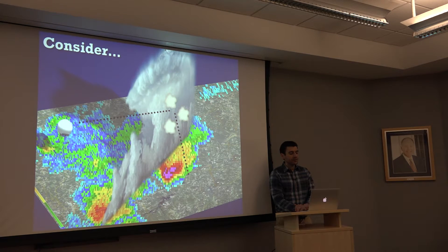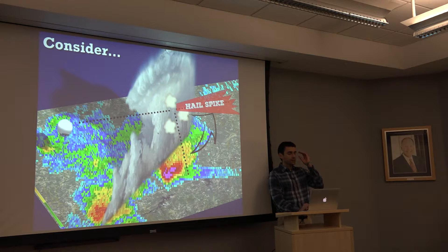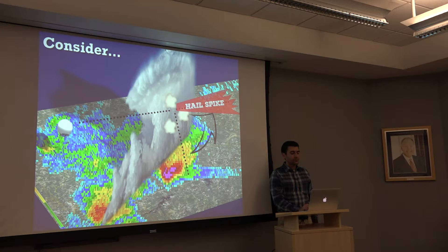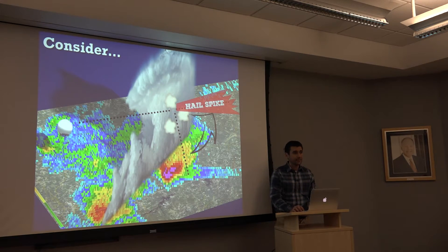The problem is our radar is pointing in this direction — it's not pointing down at the ground. It just assumes that whatever return it received is still out in the direction it's looking. Because the signal took extra time to get back, the radar thinks the return is farther downstream — just reflectivity even farther out — and we get what's known as the hail spike. We shift this path up and out and now we see the hail spike has shown up on our reflectivity image.